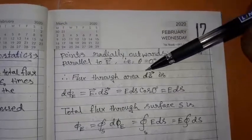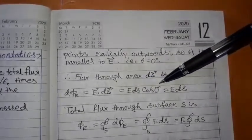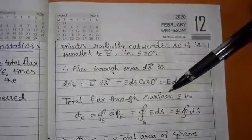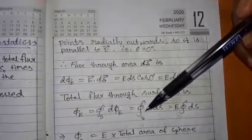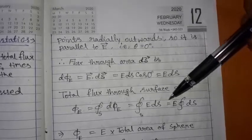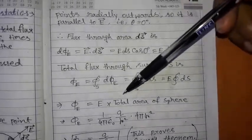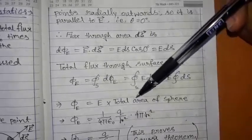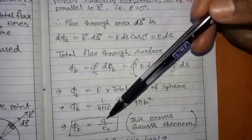The flux through the area δS is dφ_E equal to E dot dS equal to E dS cos 0° equal to E dS, since cos 0° equals 1. The total flux through the surface S is φ_E equal to the closed surface integration of E dS. Since E is constant it comes out of the integration, giving E times the total area of the sphere, which is 4πr². With this calculation we get φ_E equal to q by ε₀, which proves Gauss's theorem.